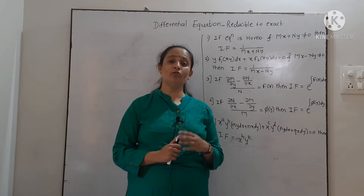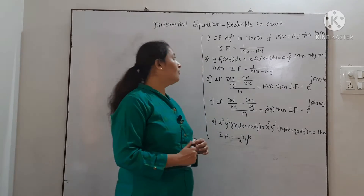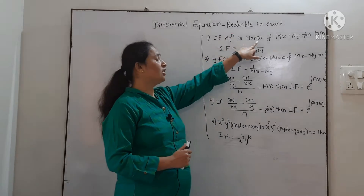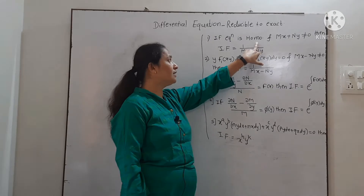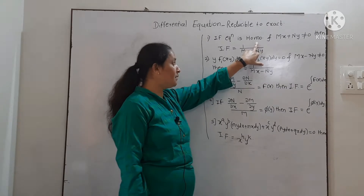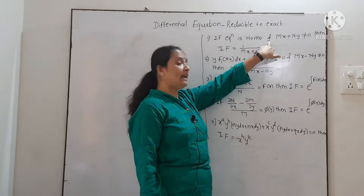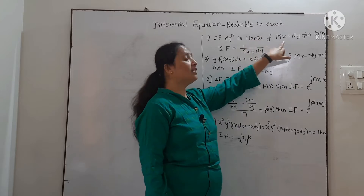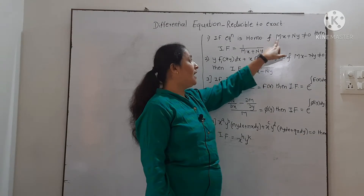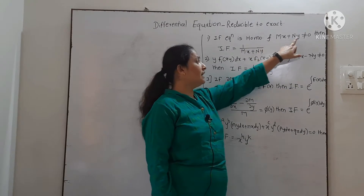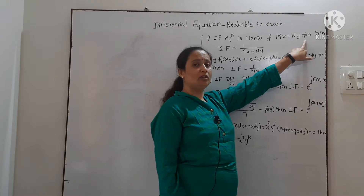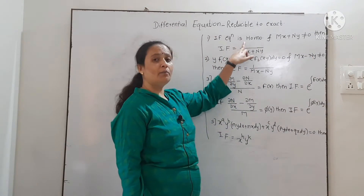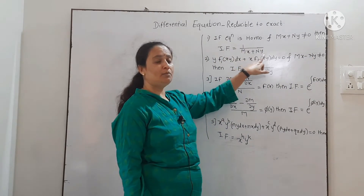And there are 5 rules to find the integrating factor. First rule is: if you observe that the given equation is homogeneous — that means everywhere the degree is same — AND (both conditions are compulsory) mx plus ny is not equal to 0, then the integrating factor will be 1 upon mx plus ny.